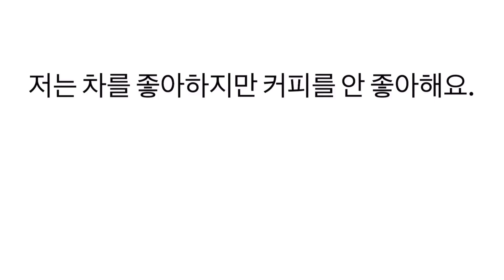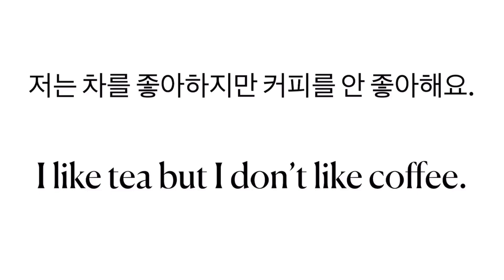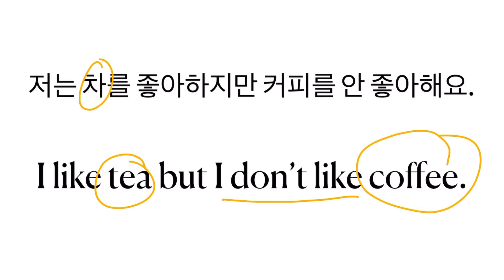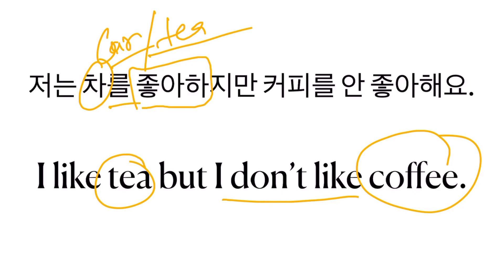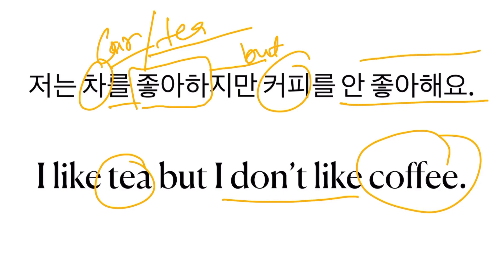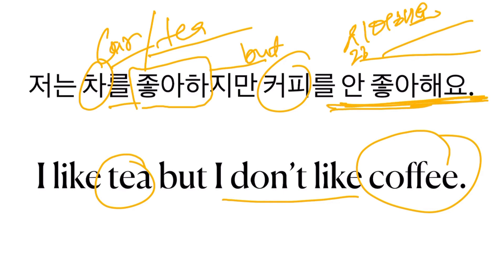Let's see the next sentence. I like tea but I don't like coffee. Chha is tea — it can also mean a car, the word for both is chha. Chharil chowa hada — chowa hada is to like. Chowa jiman means but. You can also use the word shiro hada, but shiro hada means dislike — there's a difference between 'don't like' and 'dislike,' so shiro heo is a little stronger.